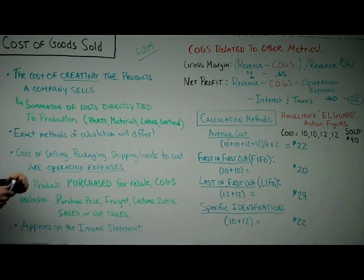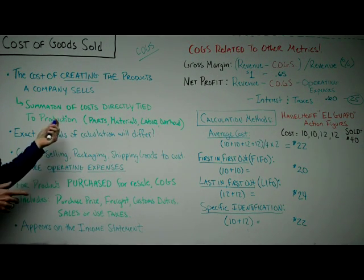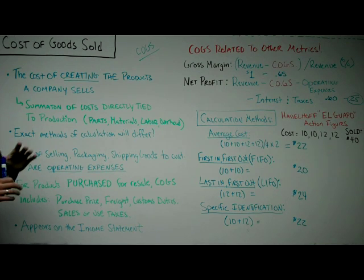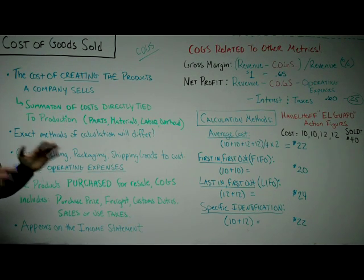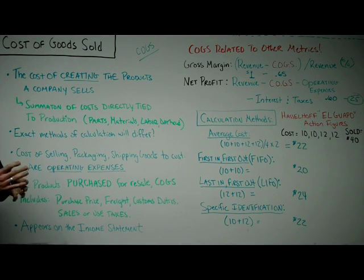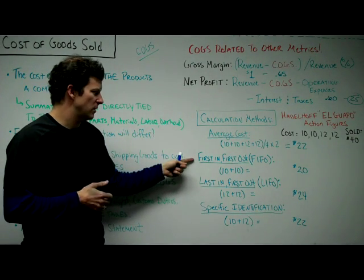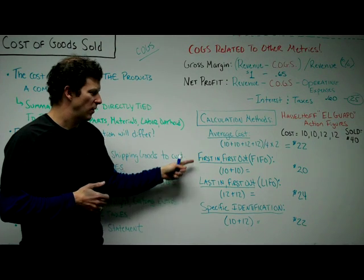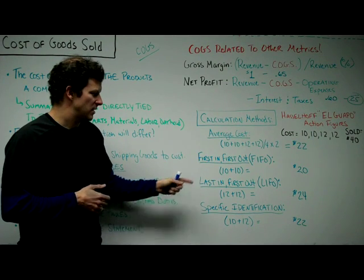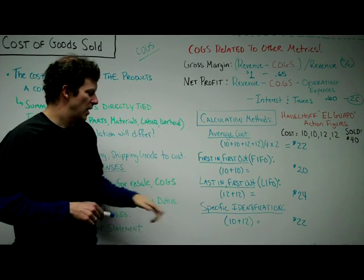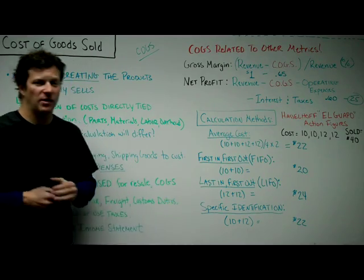There are different ways to calculate cost of goods sold. We'll go through a simple example so you can understand these different methods. The calculation methods are: average cost, first in first out (FIFO), last in first out (LIFO), and specific identification.